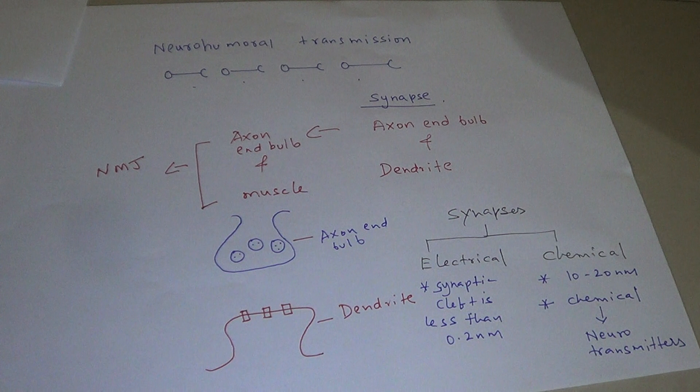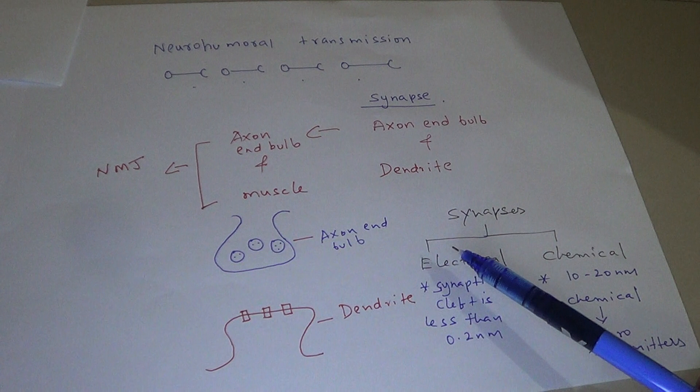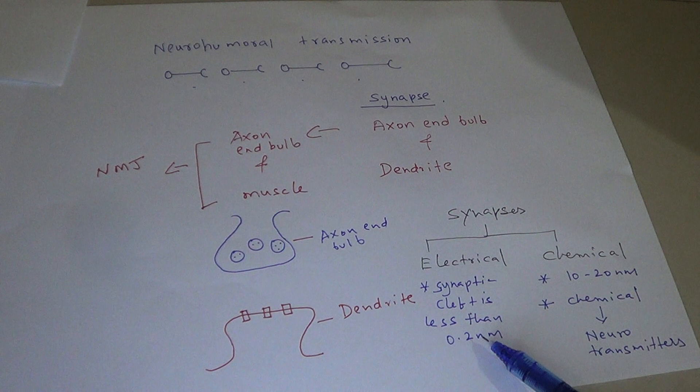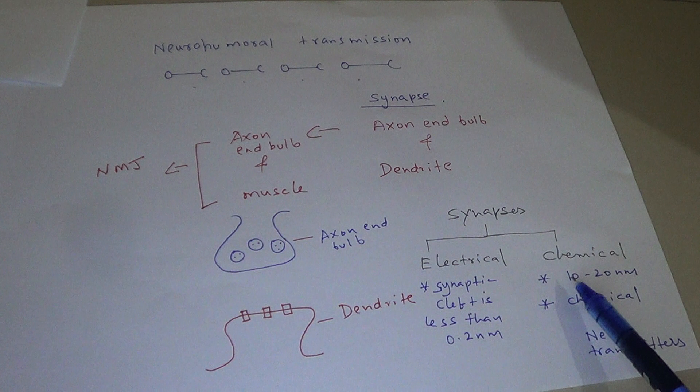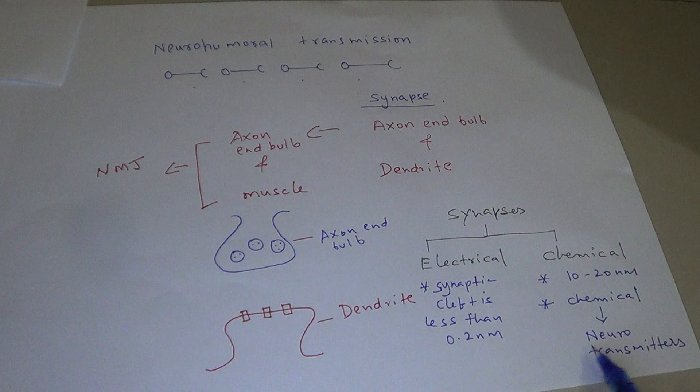To recap the classification of synapses: they are classified into two types — electrical and chemical. In electrical synapses the synaptic cleft is less than 0.2 nanometers, whereas in chemical synapses the gap is 10 to 20 nanometers. Chemical agents called neurotransmitters are released to carry the impulse from one area to another.